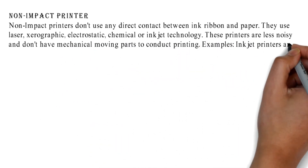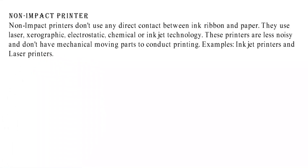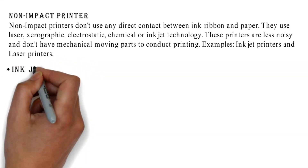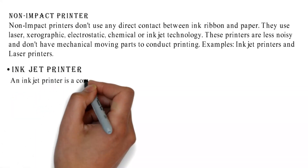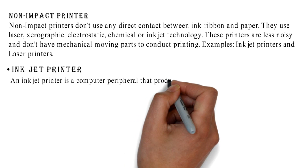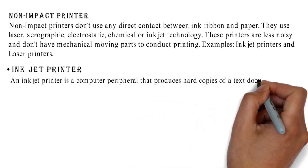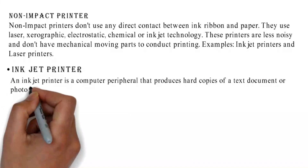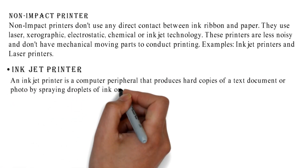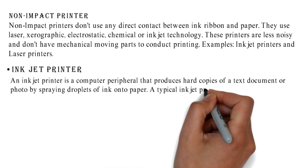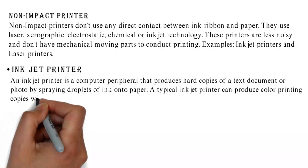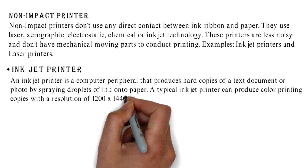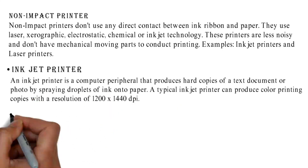Examples include inkjet printers and laser printers. An inkjet printer is a computer peripheral that produces hard copies of a text document or photo by spraying droplets of ink onto paper. A typical inkjet printer can produce color printing copies with a resolution of 1200 by 1440 dpi.